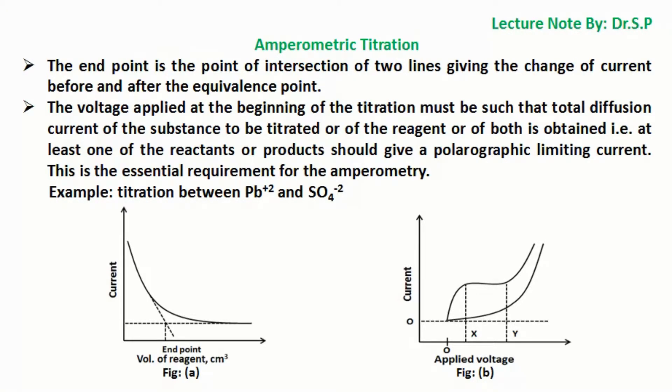limiting current is due to lead ion and is maximum at beginning. As the titrant sulfate ion SO₄²⁻ is added, precipitate of lead sulfate PbSO₄ is formed and the limiting current decreases linearly with decrease of lead ion, that means with increase of sulfate SO₄²⁻ ion. At equivalent point, current falls to almost minimum or zero and becomes constant.